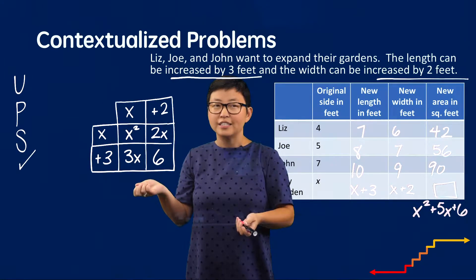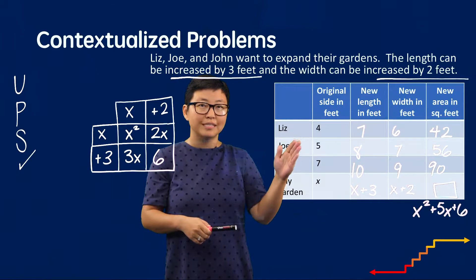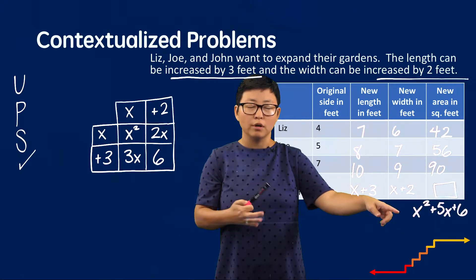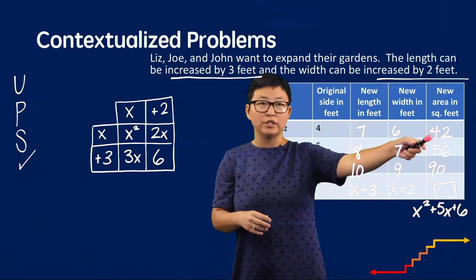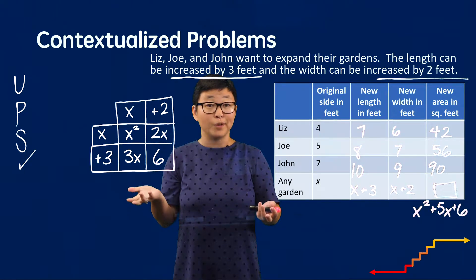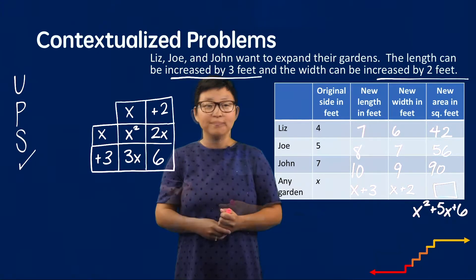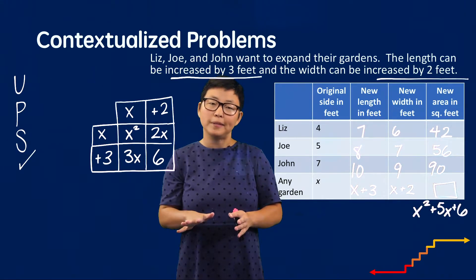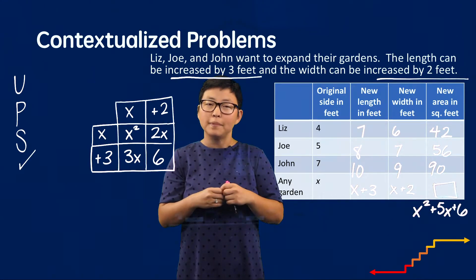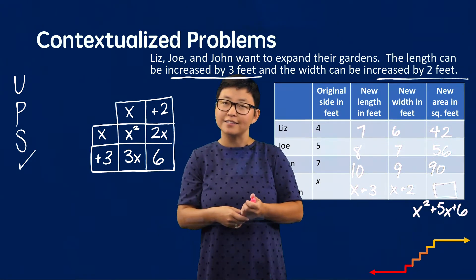The last step in our strategy is to check whether our answer is reasonable. We can do this in a couple of ways. First, you might go back to the original side lengths and plug them in — for example, plug in 4 to see if you get 42. Another strategy is to pull out concrete algebra blocks and represent these multiplicative relationships, or a student could sketch the manipulatives to recreate the corner piece and see whether they get a representation that models x² + 5x + 6.